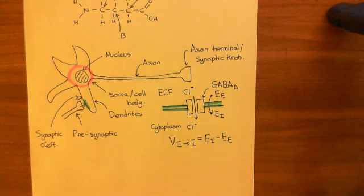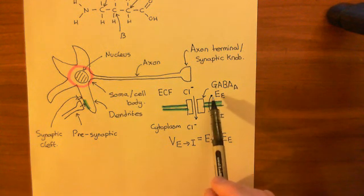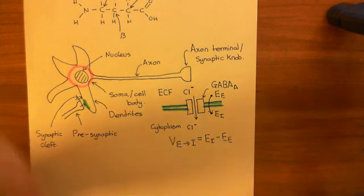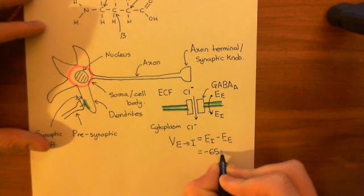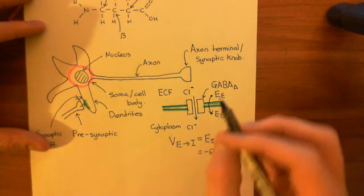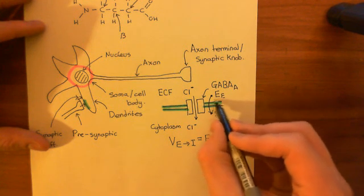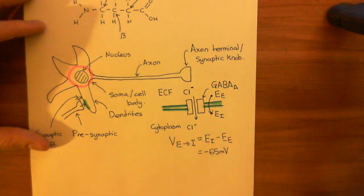We were just talking about the electrical potential difference across the cell membrane — how much the value that a machine measuring electrical potential would change if it moved from extracellular to intracellular. Usually this is around negative 65 millivolts across a cell membrane. That means that the electrical potential of the intracellular compartment is lower than the electrical potential of the extracellular compartment, by 65 millivolts.